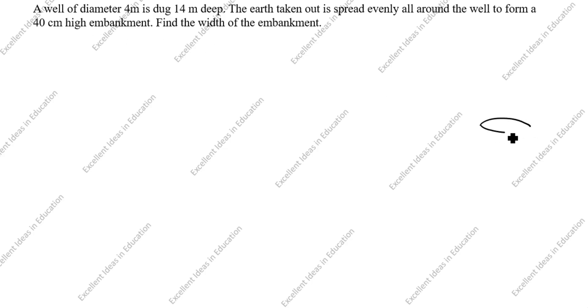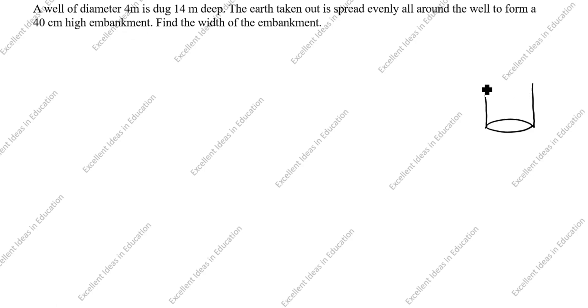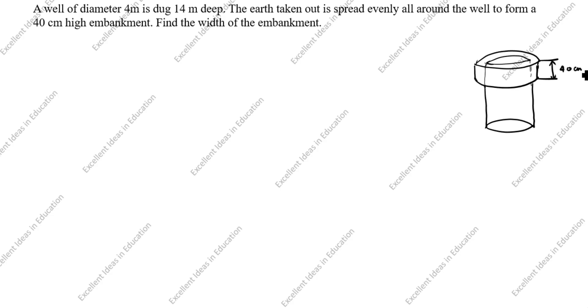A well of diameter 14 meter is dug 14 meter deep. Well means cylinder — I'll draw the cylinder here. The earth taken out is spread evenly all around the well to form a 40 centimeter high embankment. So we will draw the embankment here. What is the embankment height? This height is given as 40 centimeter.